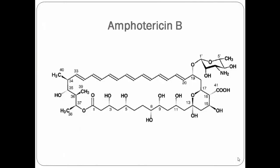Amphotericin B is an antifungal antibiotic used in the treatment of many fungal infections like Candidiasis, Aspergillosis, Cryptococcidiosis, and many other fungal infections. It is also listed as one of the essential medicines categorized by the World Health Organization. It is generally given through the intravenous route to treat patients.